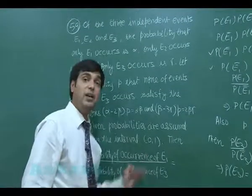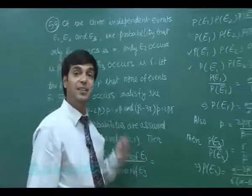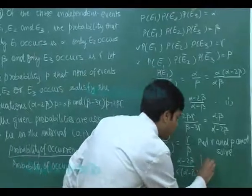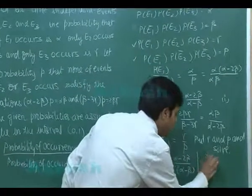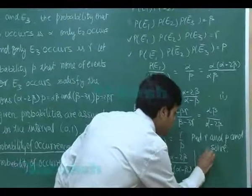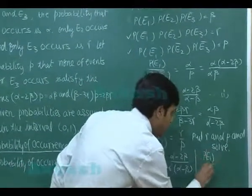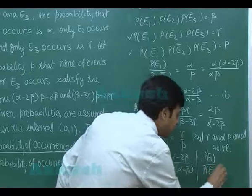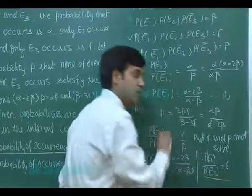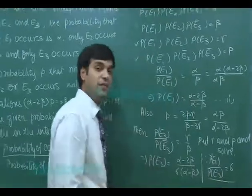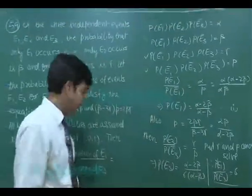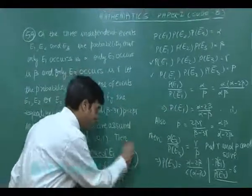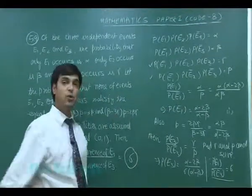My requirement is the ratio P(E1) / P(E3). Therefore P(E1) / P(E3) comes out as 6. So the answer to question 59 is 6. Let's go for the next question, question number 60.